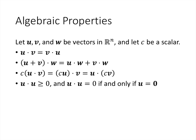Another important property is that u dot u is always greater than or equal to zero. This is because dotting a vector with itself gives u1^2 + u2^2 + u3^2 + ..., which is the sum of the squares of the entries — always non-negative. In fact, the only way this equals zero is if each of those squared terms is zero, meaning u is the zero vector.